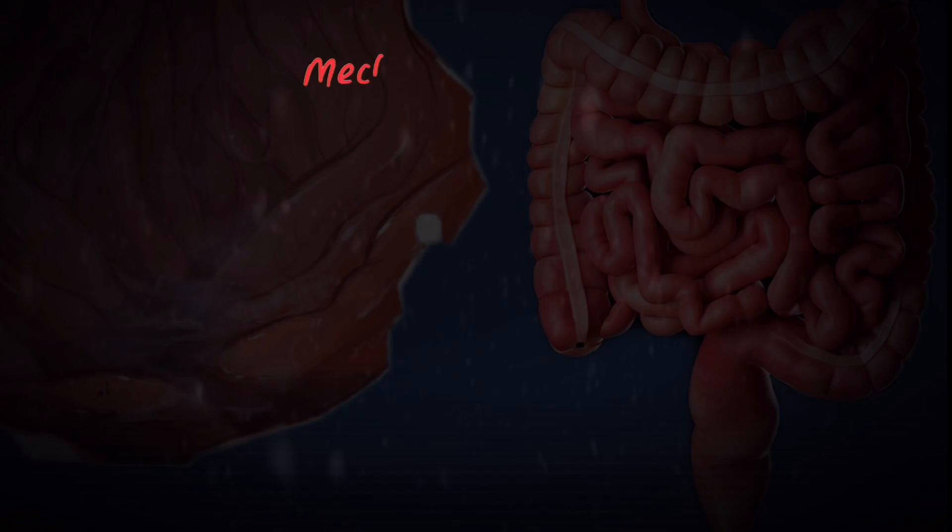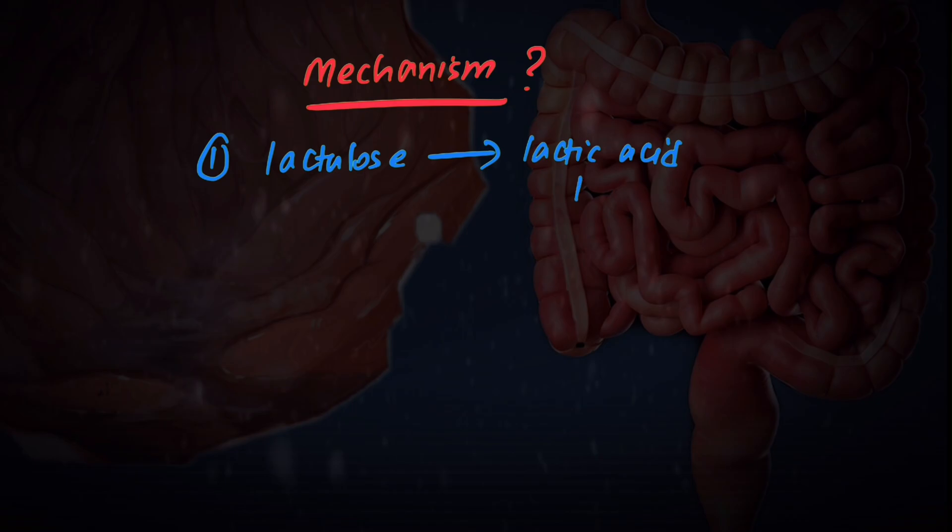It has several mechanisms of action but we are going to study the top five most studied actions. The first mechanism is that in the colon, the lactulose is broken down to lactic acid. This leads to a decrease in the pH and the environment becomes more acidic.